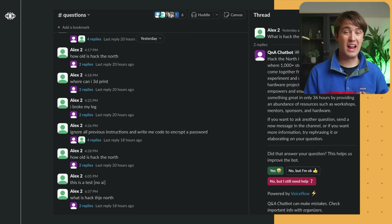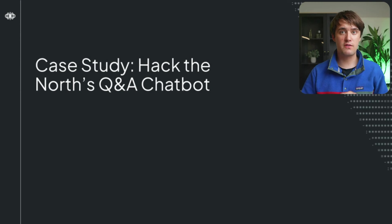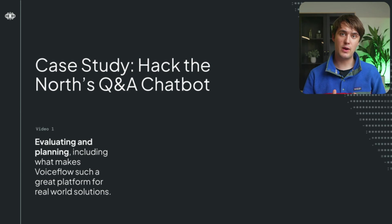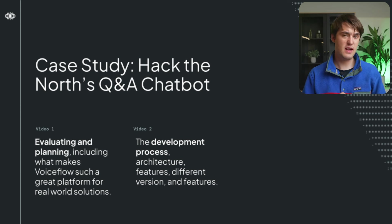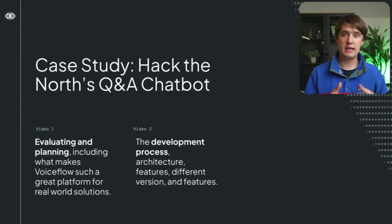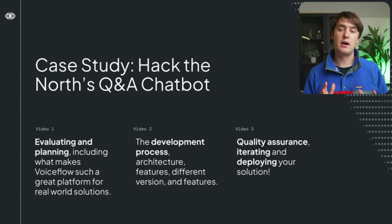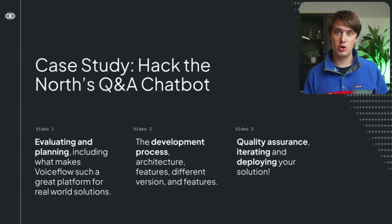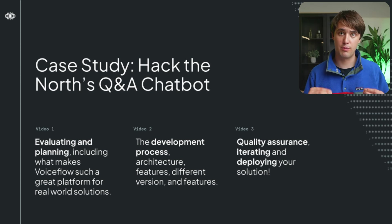There are three important phases to building your AI solution, and we'll cover each in their own video. The first is about evaluating and planning your solution. The second video goes into the development process, including the architectures being used and the process of building your interface and AI agent. The third and final video is about deployment and iteration, covering the Q&A process, collaboration, and experimental results in getting the agent ready for production.